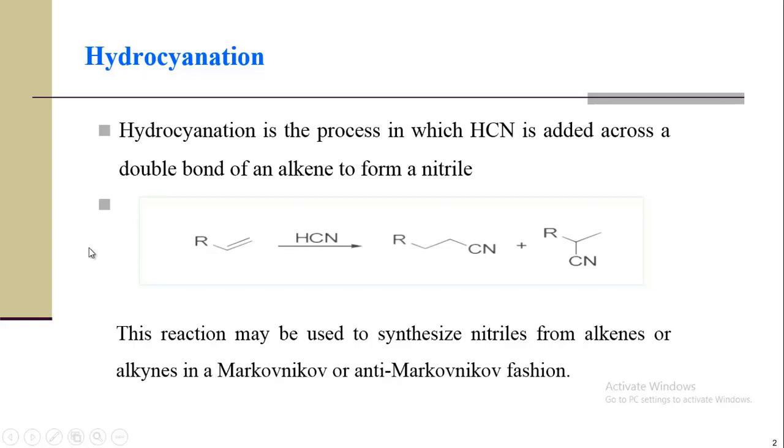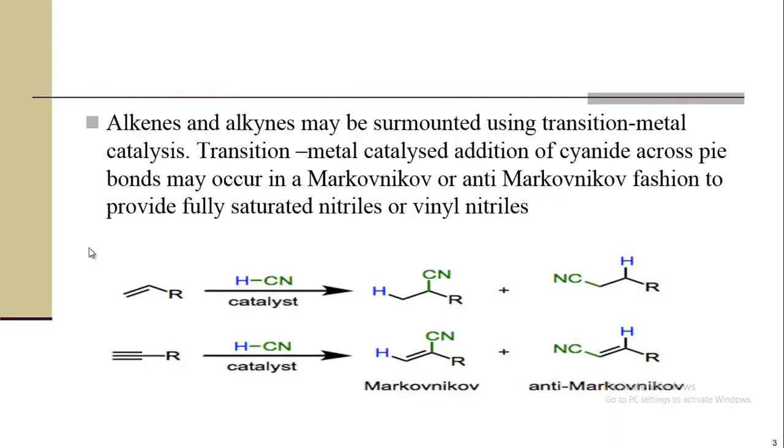We can add around alkene or alkyne. Alkenes and alkynes may be surmounted using transition-metal catalyst. Transition-metal catalyzed addition of cyanide across pi bonds may occur in two ways. Markovnikov product means the negative part goes to that carbon which has less number of hydrogen atoms, and anti-Markovnikov means those which have greater number of hydrogen atoms.